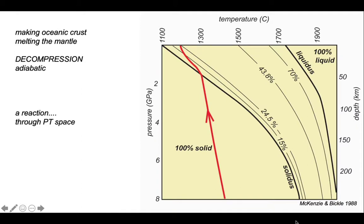Were our rock to follow its adiabat from 100% solid all the way up to the Earth's surface it would have generated 24.5% melt volume. The remainder, 75.5%, would remain as solid mantle.